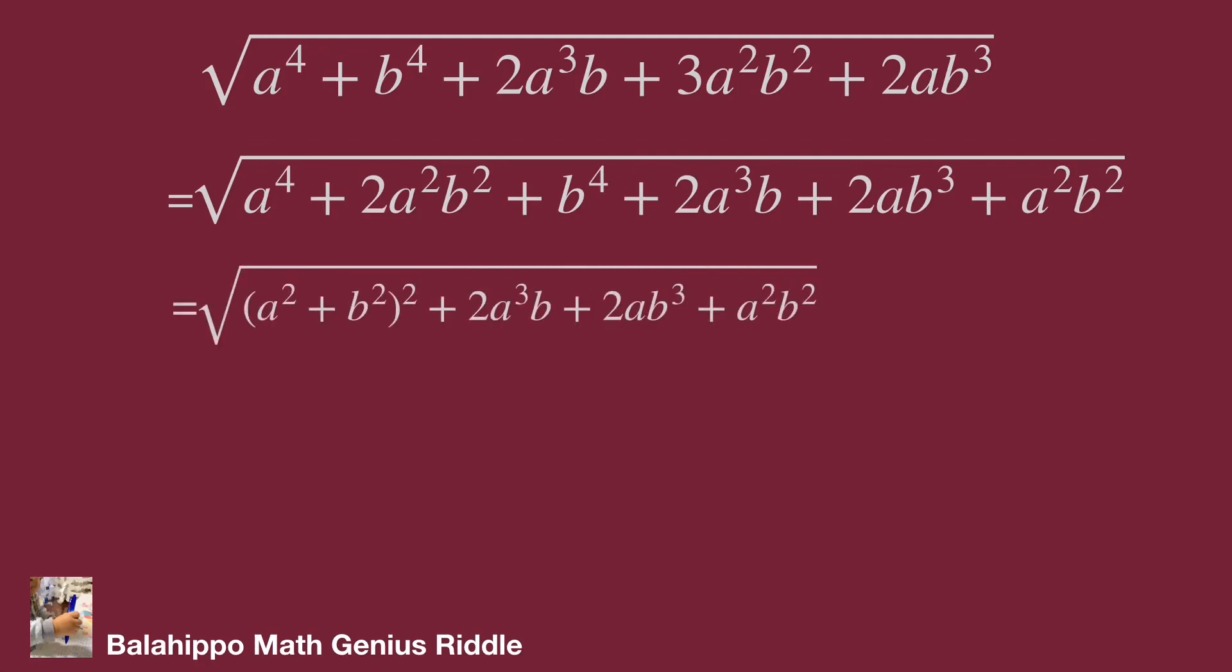Then we have (a^2 + b^2)^2 in these equations. Therefore, we have new findings: the first item (a^2 + b^2)^2 and the last item a^2b^2. They are both squared.